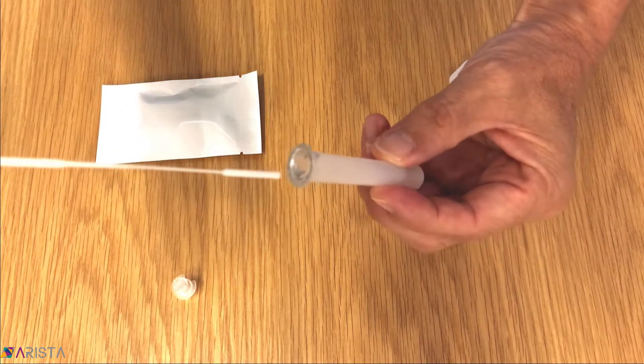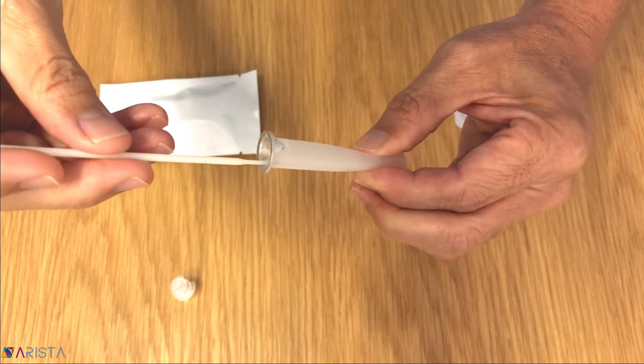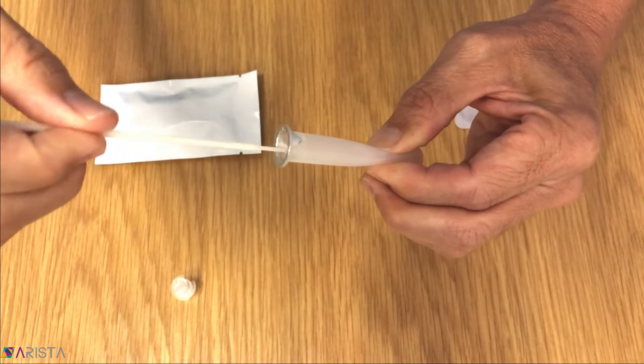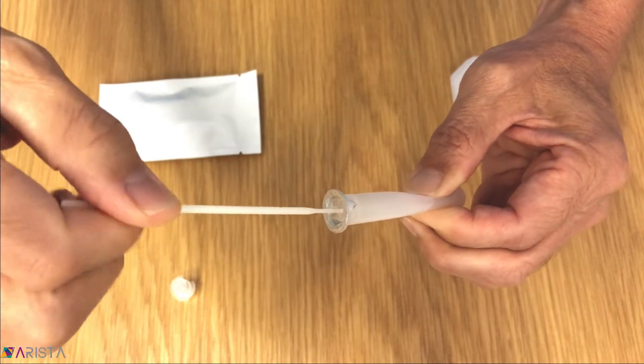Fully immerse the swab sponge tip into the diluent. Then squeeze the tube against the swab tip and rotate the swab stick in a twisting motion for 30 seconds to ensure all the sample is mixed into the diluent.